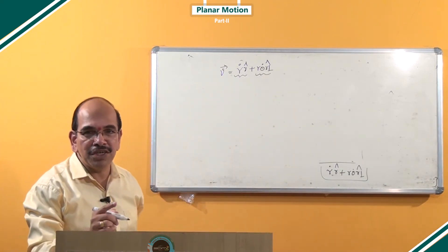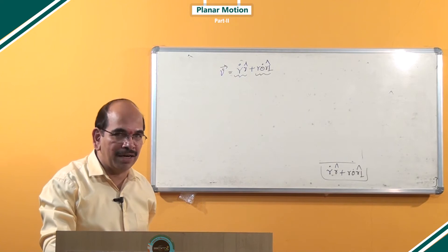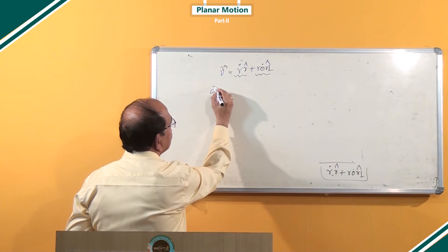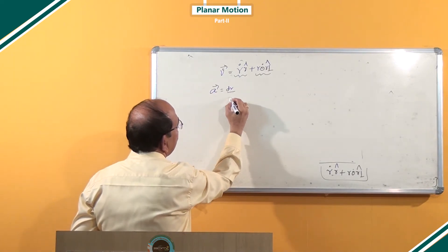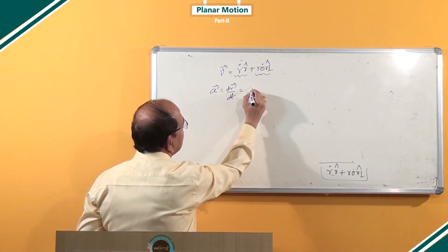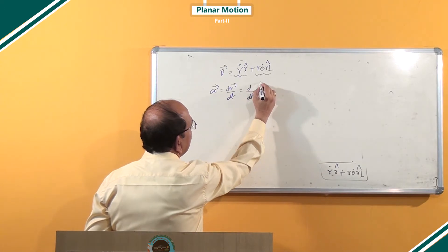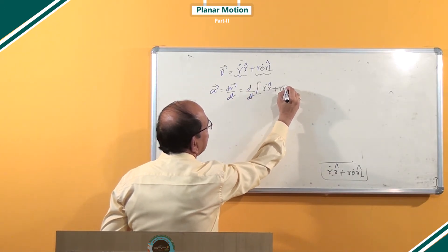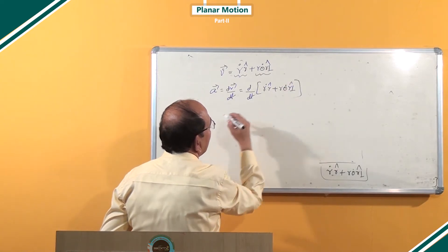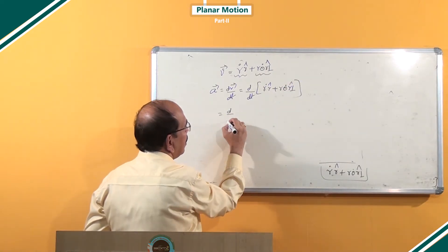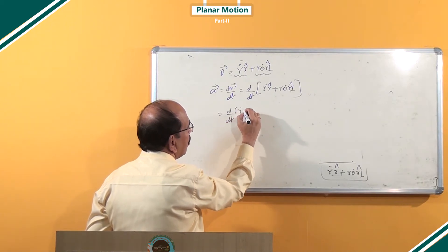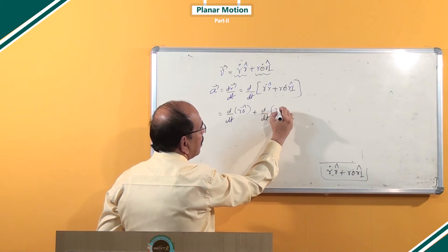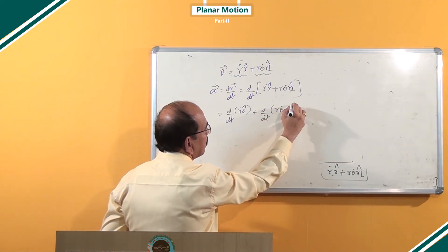Now, if you differentiate this velocity with respect to time, you will be left with the net acceleration. Therefore, net acceleration a equals dv/dt, which is d/dt of (r-dot into r-cap) plus d/dt of (r·θ-dot into r-perpendicular-cap). You can simplify this as d/dt of (r-dot · r-cap) plus d/dt of (r·θ-dot · r-perpendicular-cap).